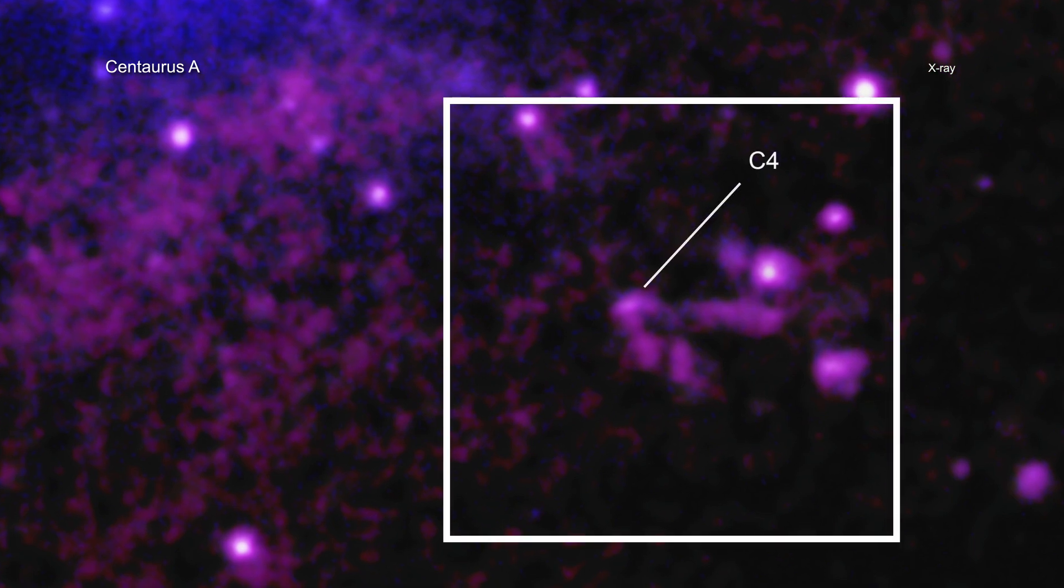Called C4, this source is located close to the path of the jet from the supermassive black hole and is highlighted here.